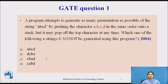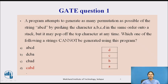Let's work through this. If we push a, then b, then c, then d, we check the different popping options. For the first option: a is pushed and popped, b is pushed and popped, c is pushed and popped, d is pushed and popped — so the string 'abcd' is possible. For the second option 'dcba': all of a, b, c, d are pushed, then d is popped, c is popped, b is popped, and a is popped — so this is also possible.